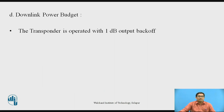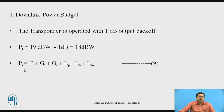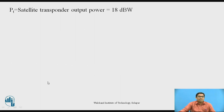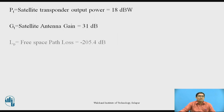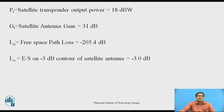Now the downlink power budget. The transponder is operated with 1 dB output back-off, so Pt = 19 dBW − 1 dB = 18 dBW. The received power formula is: PR = Pt + GT + GR + LP + LA + LM, where PR is received power; Pt = 18 dBW; GT (satellite antenna gain) = 31 dB; LP = −205.4 dB; LA = −3 dB (E/S on-axis 3 dB contour); LM = −0.8 dB (other losses). Putting all values in, we get PR = −160.2 dBW.